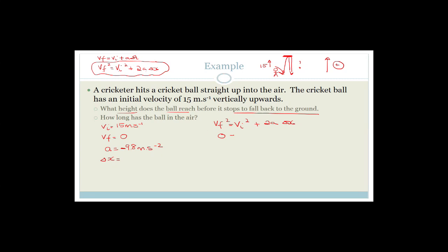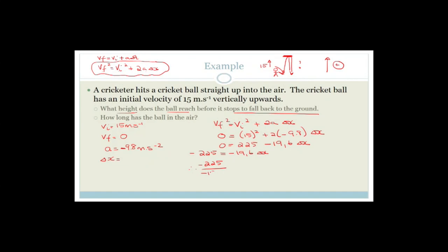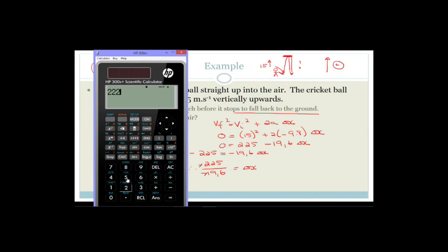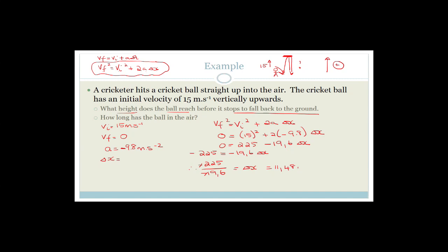So, final velocity is 0, squared is 0 = 15² + 2×(−9.8)·delta x. That becomes 0 = 225 − 19.6·delta x. So −225 = −19.6·delta x. Therefore delta x = −225 ÷ −19.6. Calculating 225 ÷ 19.6 gives 11.48. So delta x is 11.48 meters — that is the height, 11.48 meters.